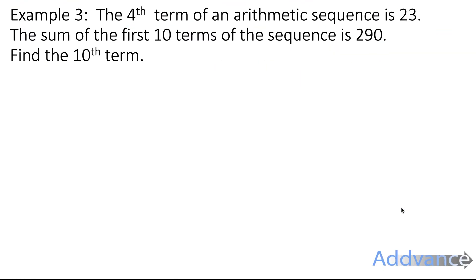Now Example 3 is a bit harder. This is probably a grade 8 or grade 9 question at GCSE. It says, the 4th term of an arithmetic sequence is 23. The sum of the first 10 terms of a sequence is 290. Find the 10th term. Now this is a bit scary. I'm not really sure where to start. But I think the best thing to do will just be write out what I know.